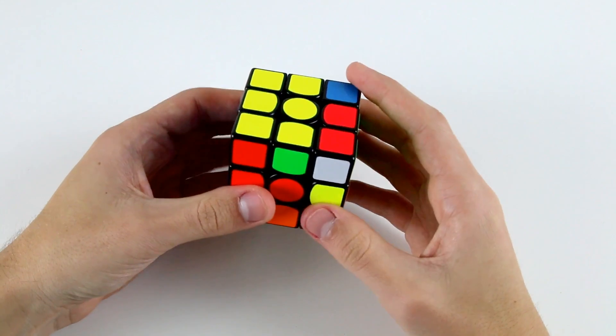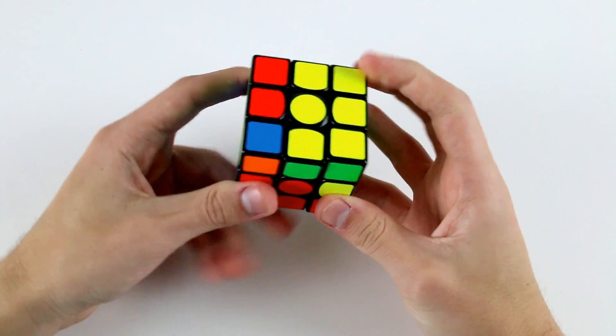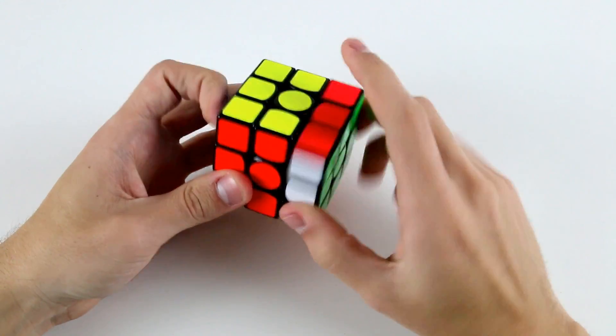So we can do something like R prime U prime to set these two up opposite to one another, then do M2 U2 M2 and then reinsert that pair.